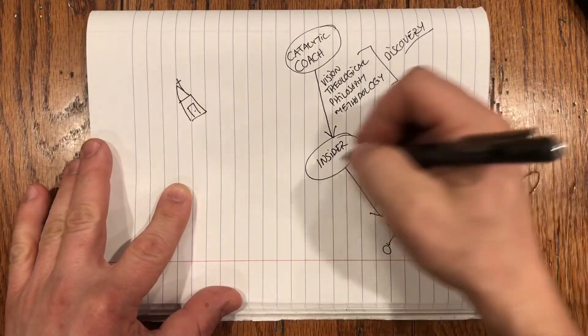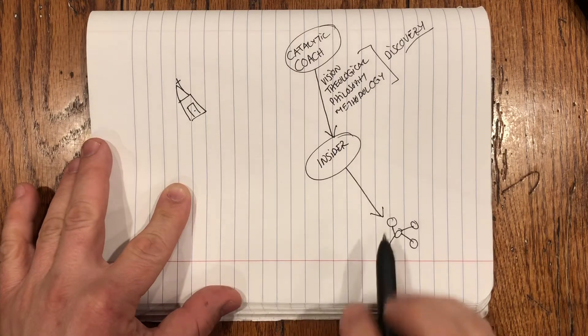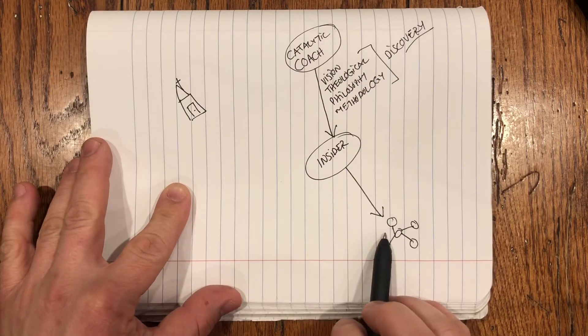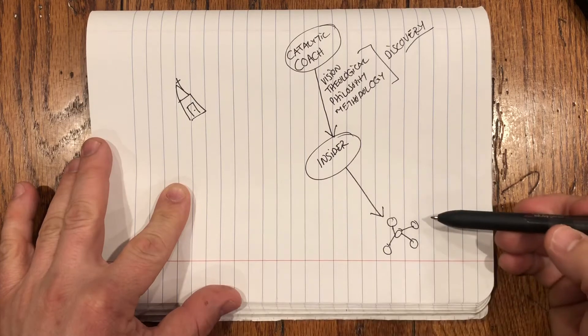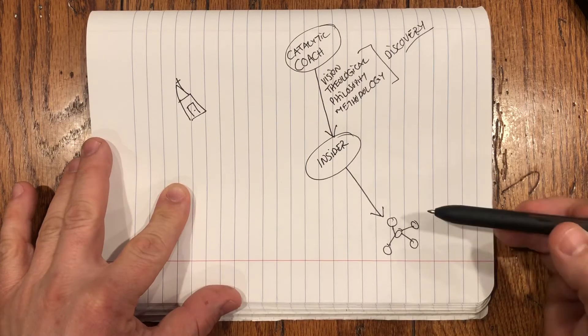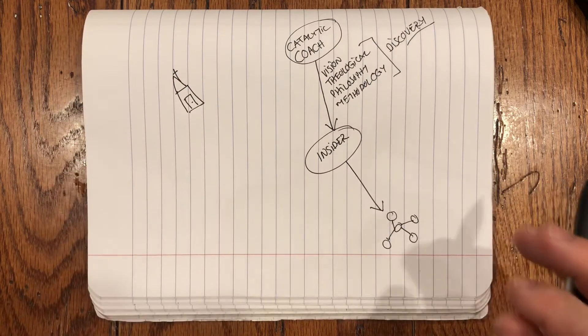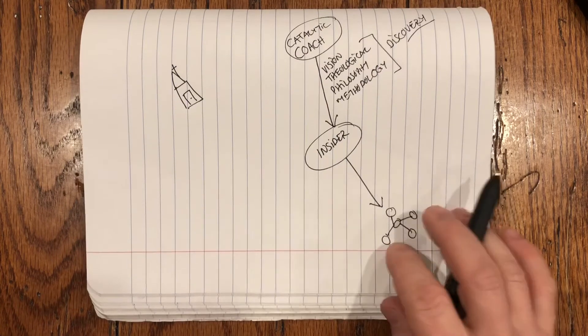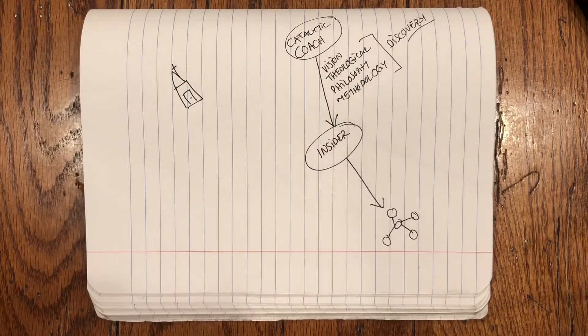So as this begins to progress and we see some new churches formed, the reality is these churches will most likely be a mess. Now, I want to encourage us here because it's easy to think, well, that's a mess and therefore it's wrong. But that's not what we see throughout the New Testament. And a really great example of this is the church on the island of Crete, which we see in the book of Titus.